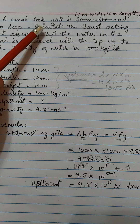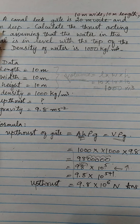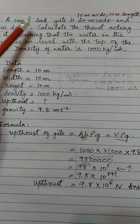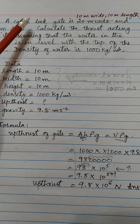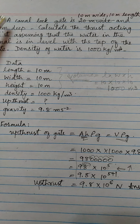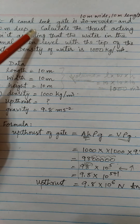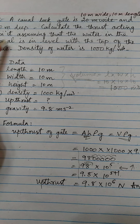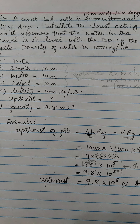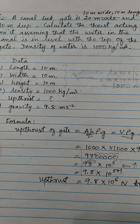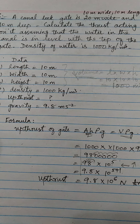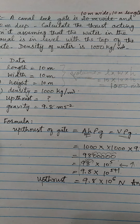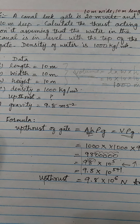Calculate what we have to do — calculate the thrust acting on it. We have to calculate the thrust which is applied on the canal lock gate, assuming that the water in the canal is level with the top of the gate. The density of water is 1000 kg per cubic meter.